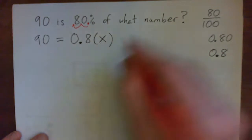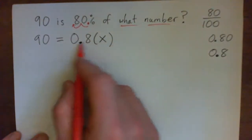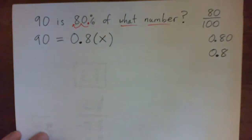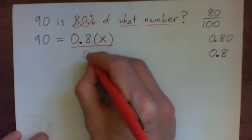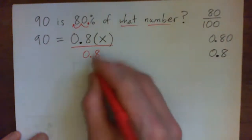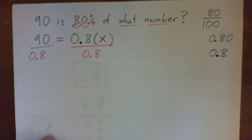So, we need to solve for X because we've got to find what number. Now, X is being multiplied by 0.8. So, what do you do to get it on its own? Divide by 0.8. And if you divide this side by 0.8, you must divide this side also by 0.8.